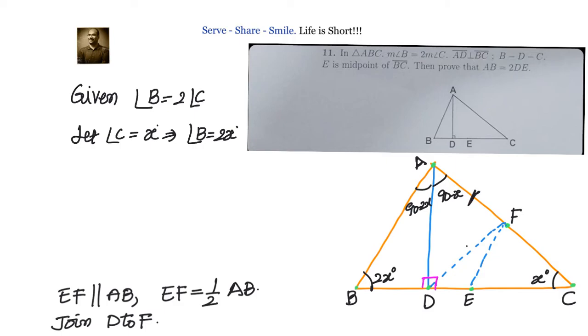We know that F is the circumcenter of right triangle ADC. Then ADF is an isosceles triangle in which the base angles are equal. Therefore, angle ADF is 90 minus x.